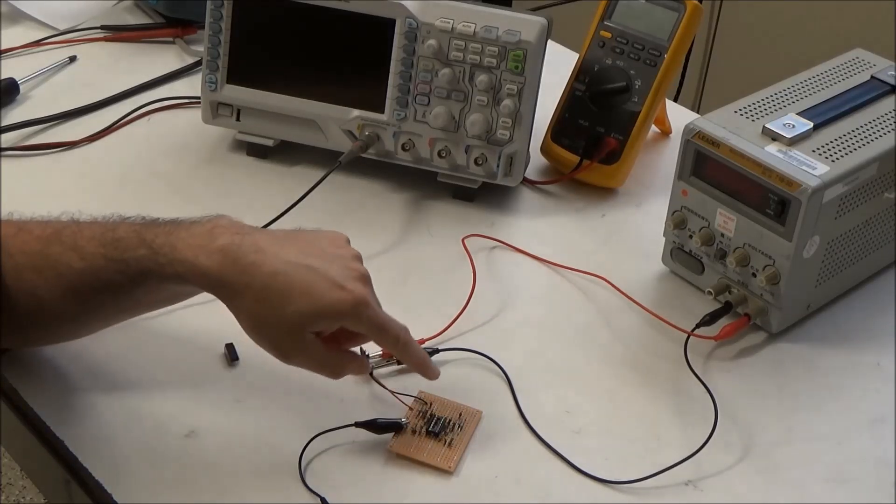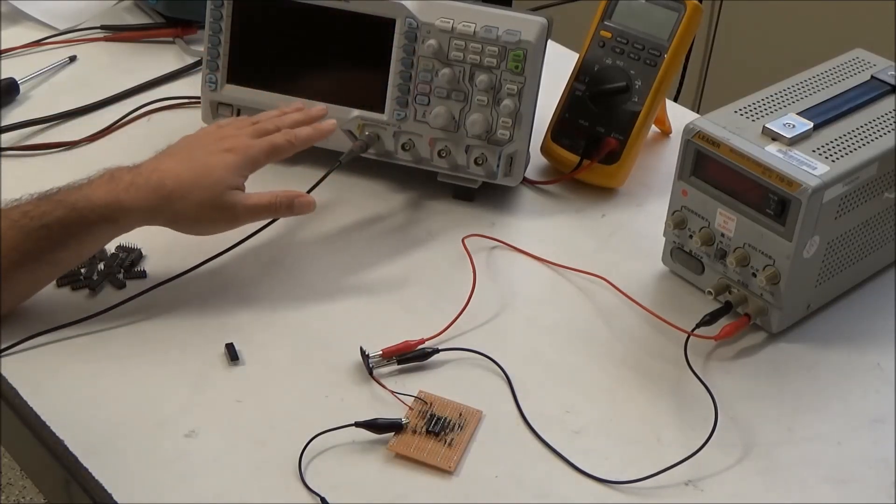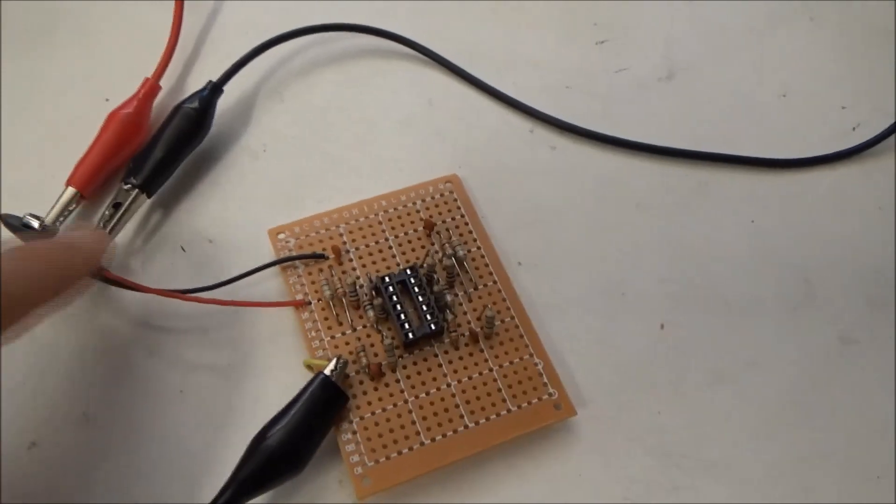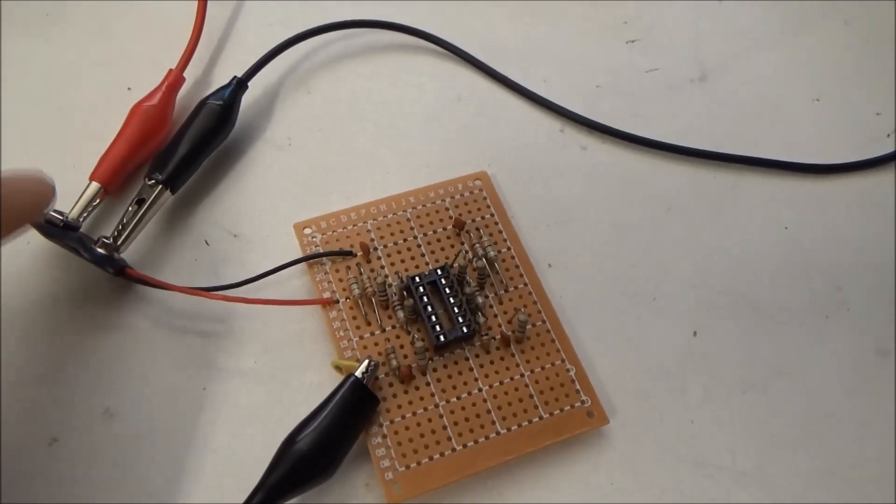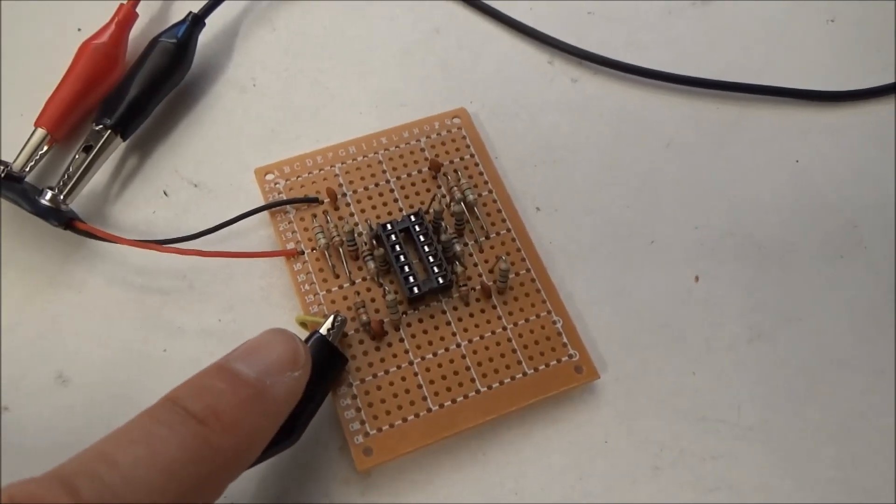I hate working with proto-boards, so I didn't build any LEDs into this, and I have to use my oscilloscope to verify a pass or a fail. So I can connect this to either a 9-volt battery or a benchtop power supply, and I built a little grounding terminal here for the oscilloscope probe.